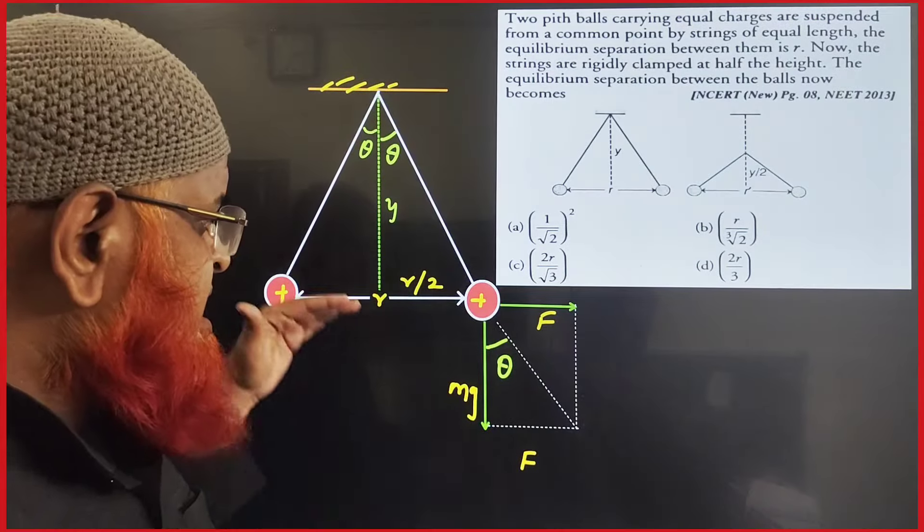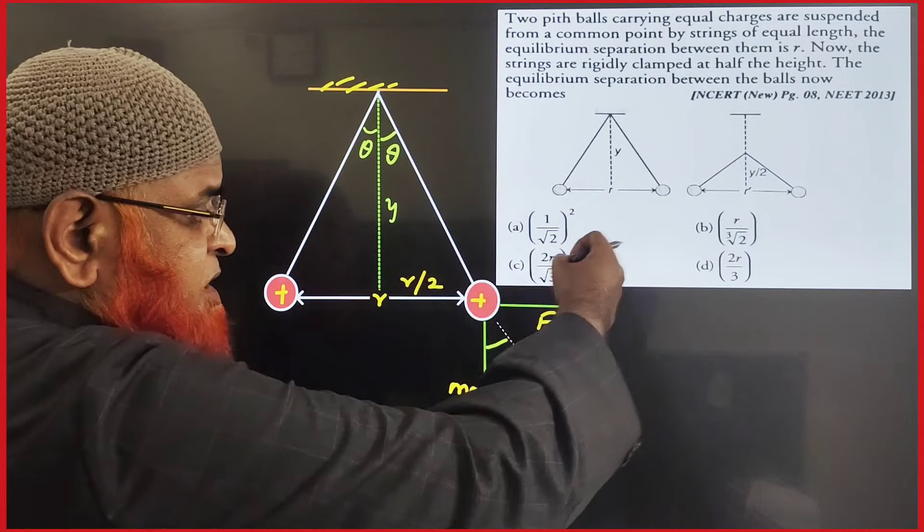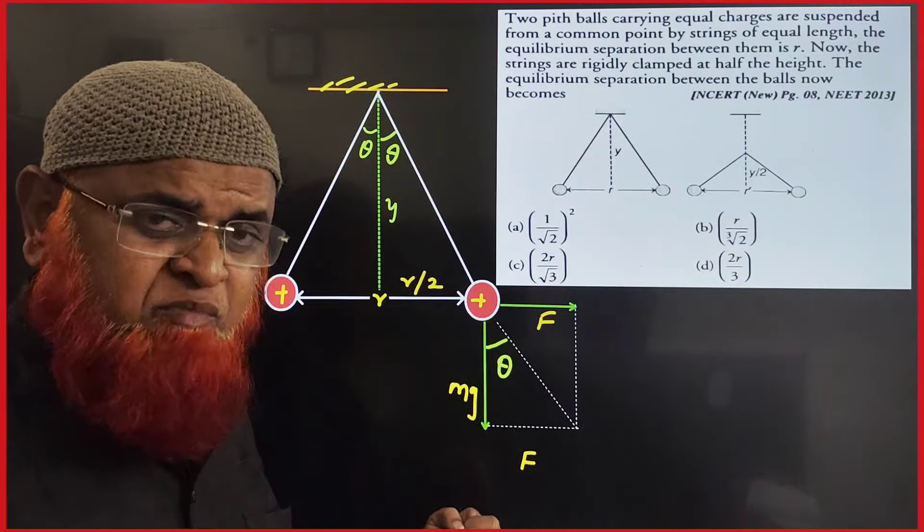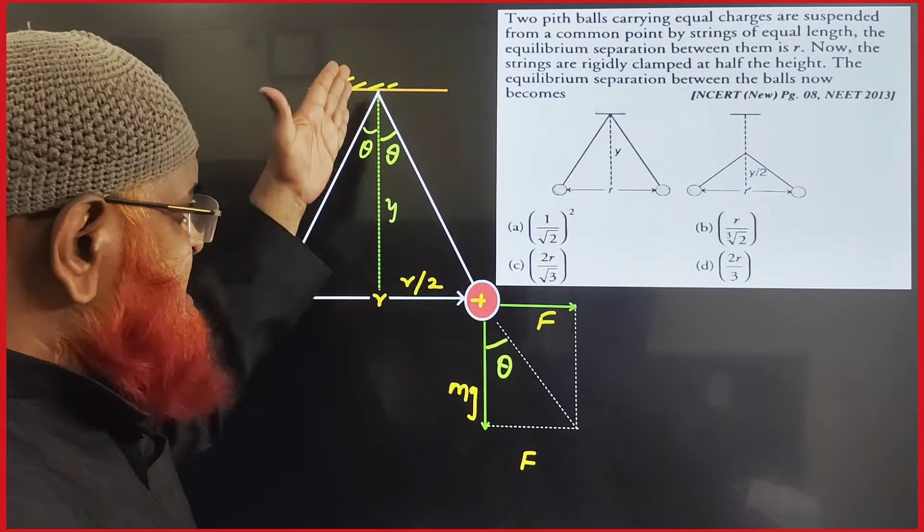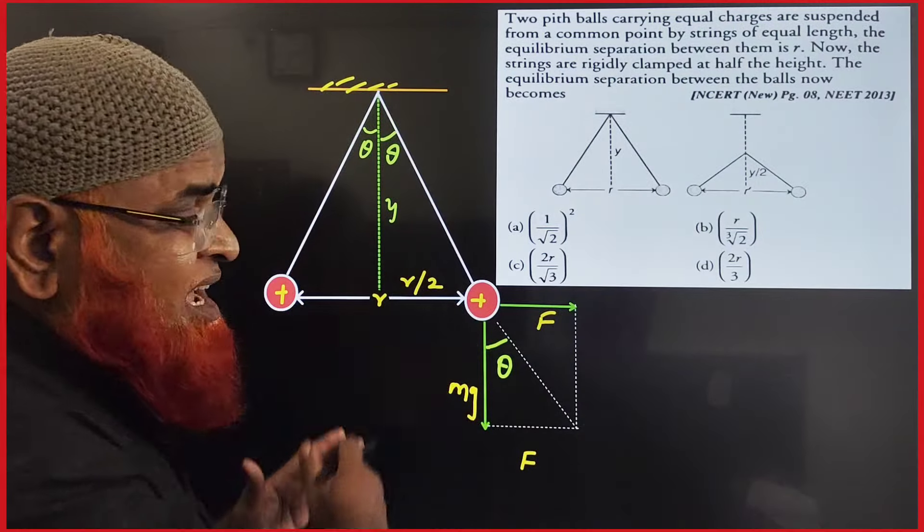Then what is going to happen? In this direction the force of repulsion acts, in this direction mg acts, and these two angles are same because they are corresponding angles because these two are parallel lines.